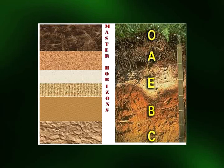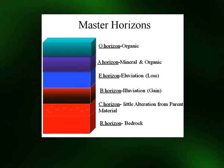Generally there are five to seven master horizons in the soil profile recognized in different soils; however, not all soil profiles contain all these horizons and they differ from one location to another. The master horizons and their subdivisions represent layers which show evidence of change and some layers which have not been changed.